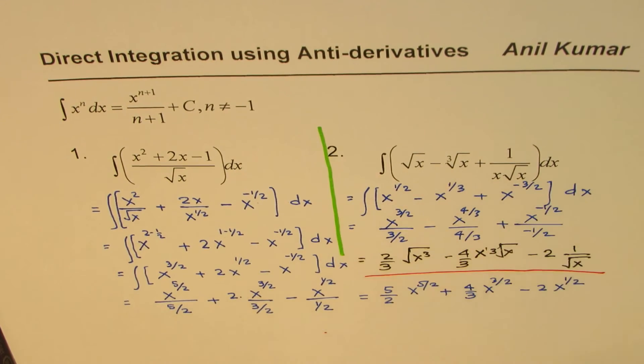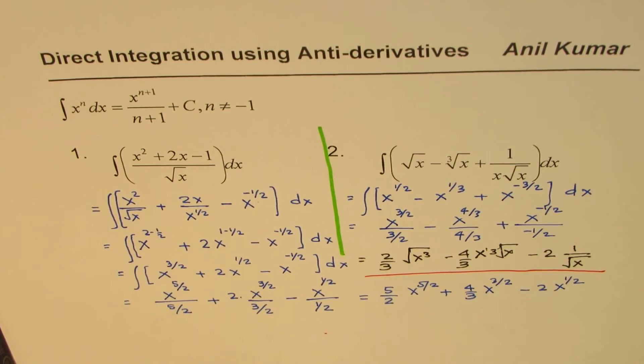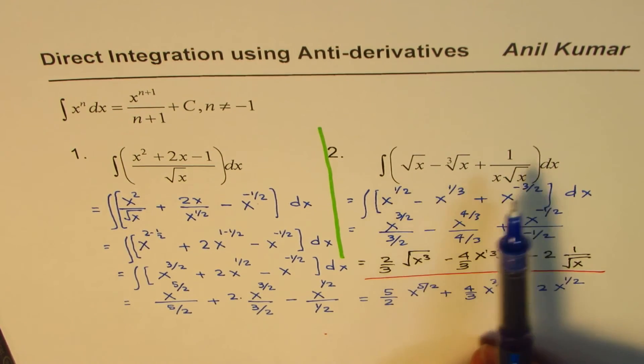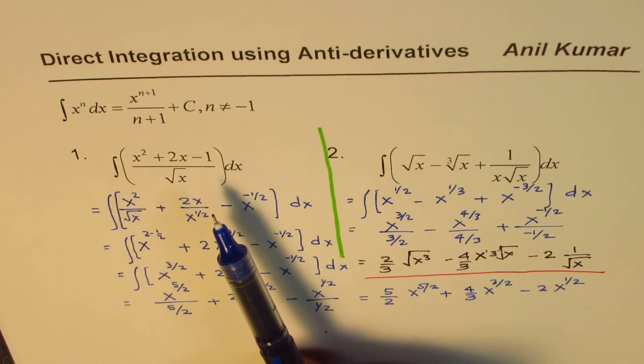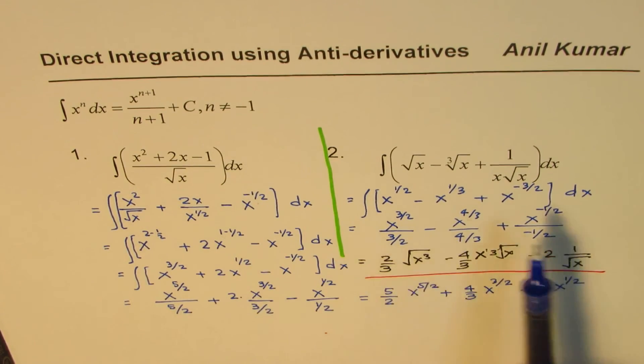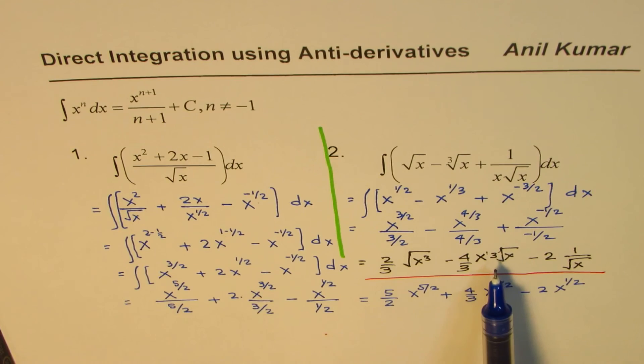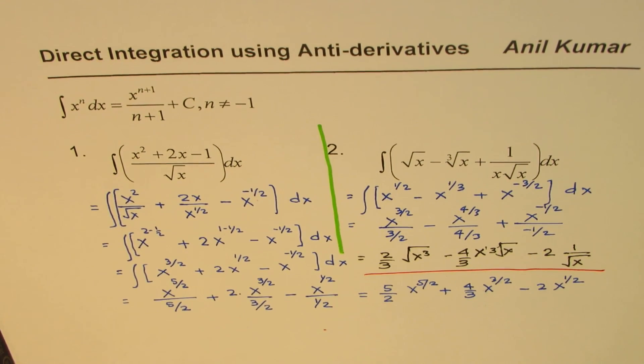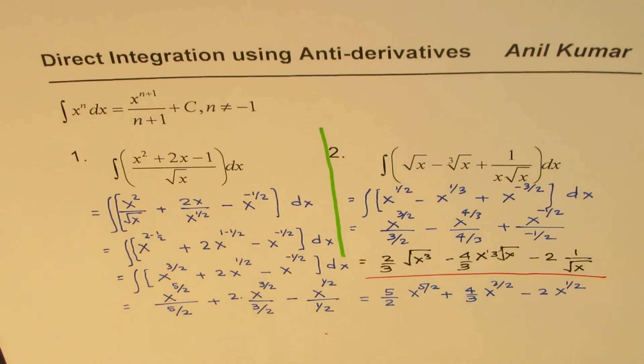So that is the solution for the first one. I hope the steps are clear. The idea is, whenever you have a function like this, we do not have product and quotient rules for integrals, write them in simplified form with rational exponents, apply the formula, and at the end, simplify and write down your result. I hope that helps. Thank you, and all the best.